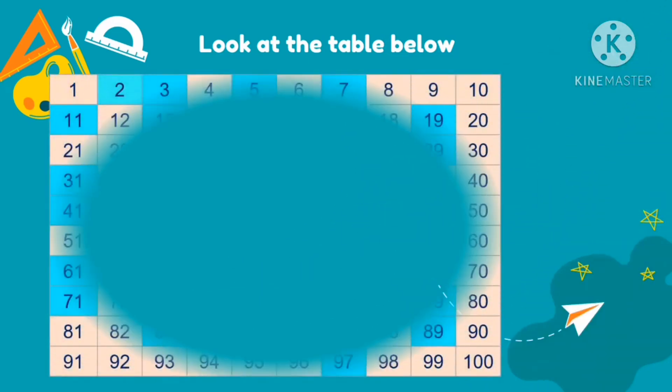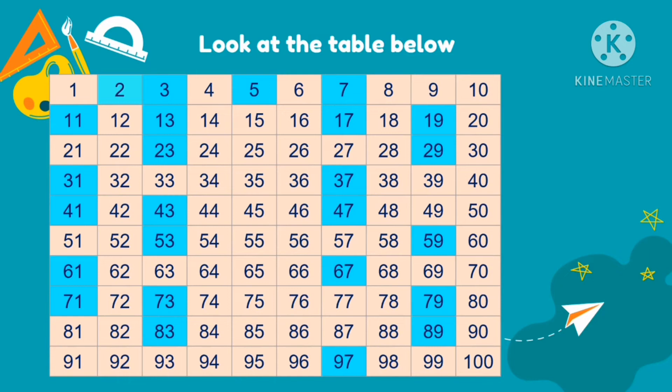Look at the table below. So these are counting numbers from 1 to 100. So if you notice, we have numbers that are shaded in blue. And these numbers that are shaded in blue are prime numbers. So just like what I said in the trivia earlier, that 2 is the smallest even prime number. And the non-shaded or the pink numbers are composite numbers.